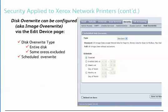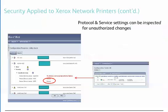There are two settings for disk overwrite, which is known as image overwrite on the device. The first setting gives the administrator the choice of overwriting the entire disk or not overwriting areas of the disk used for storing jobs. The second setting enables the administrator to schedule a set cadence when the device's disk is overwritten. Another security feature is the ability to run configuration sets against a group of devices and review the progress report to inspect any unauthorized changes.